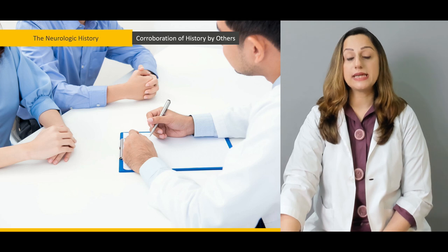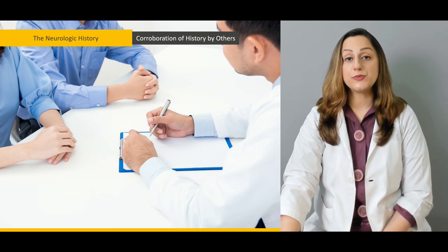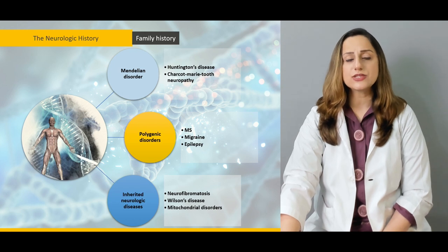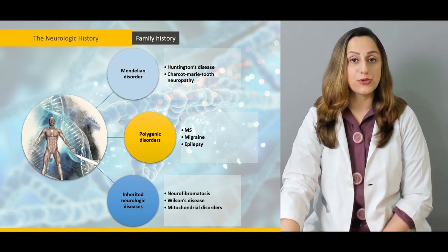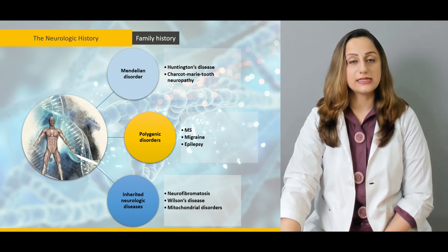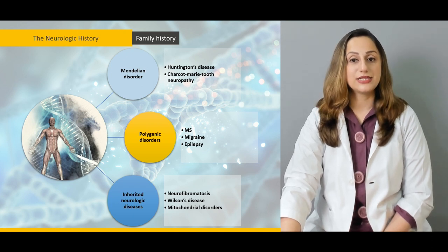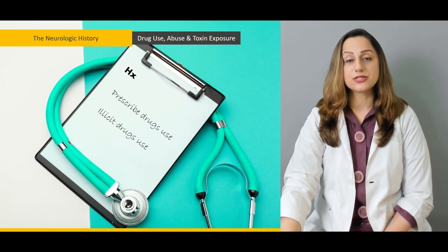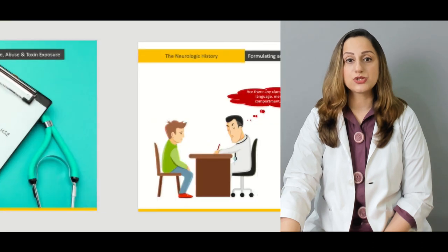How to corroborate history from relatives and family is a key feature we'll discuss in this lecture. Family history will highlight any Mendelian disorders, polygenic disorders such as multiple sclerosis, migraine and epilepsy, or inherited neurological diseases such as neurofibromatosis, Wilson's disease, and mitochondrial disorders. We'll also take the drug history in detail to elicit whether the patient has been exposed to toxins in the environment.